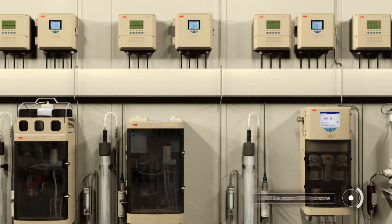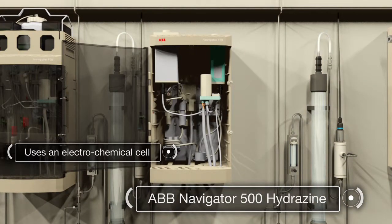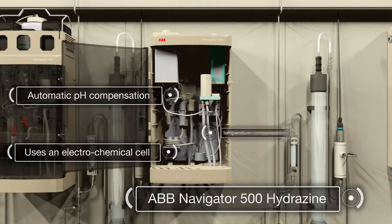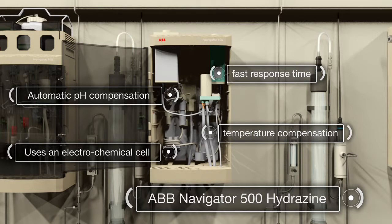ABB's Navigator 500 Hydrazine uses an electrochemical cell to accurately measure the levels of oxygen scavenging chemicals such as hydrazine in boiler feed water. This accuracy is reinforced by automatic pH and temperature compensation, which coupled with fast response time help ensure that readings reflect the actual feed water conditions.